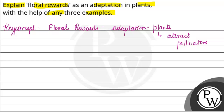Pollinators include insects, birds, and mammals. The first example we can consider is nectar — like in the sunflower, where nectar flowers are mostly produced.